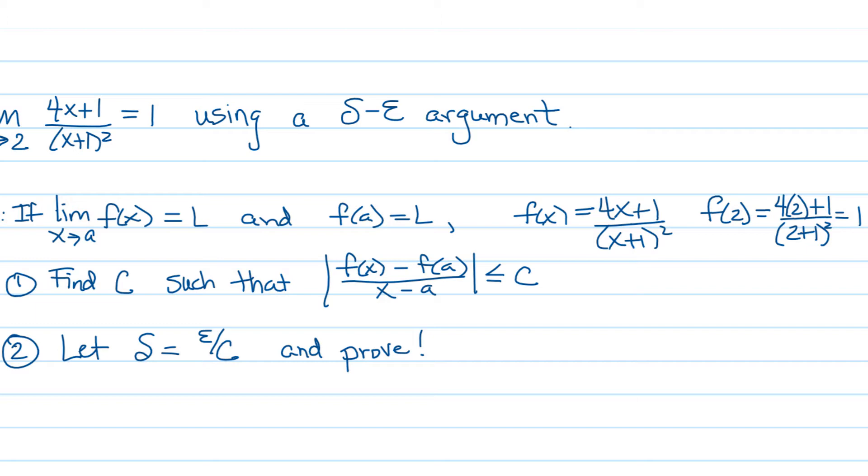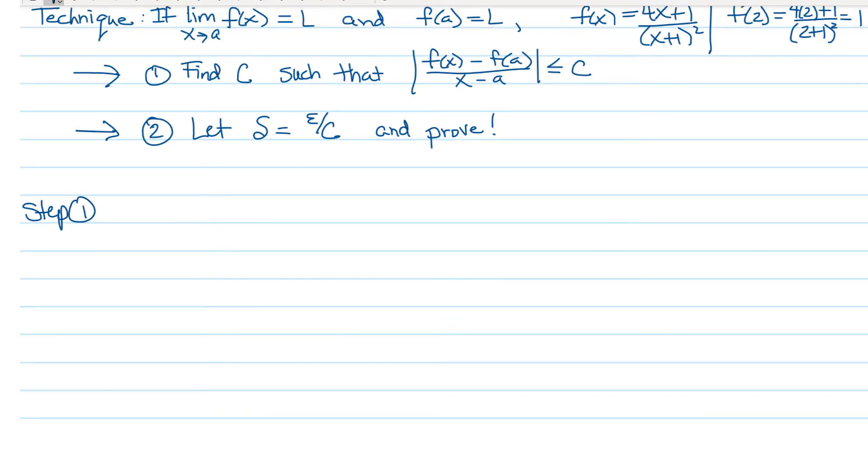In that situation, one thing you can do is find a number c that bounds the absolute value of the difference quotient. Once we've recognized that plugging in a gives us the limit, we can move on to trying to find this number c. After we find c, we're going to let delta equal ε/c and then write out our proof. So here we go, let's work on step 1: finding c.